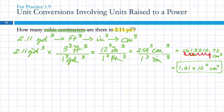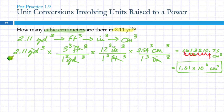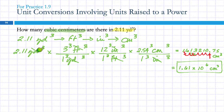A student asks: we cubed everything, but just to confirm — we don't cube the given number 2.11, right? That's correct. The cube is on the unit — it's a volume unit, and 2.11 is simply how many of those you have. Don't cube the given quantity itself.